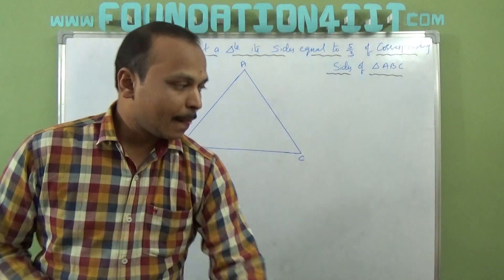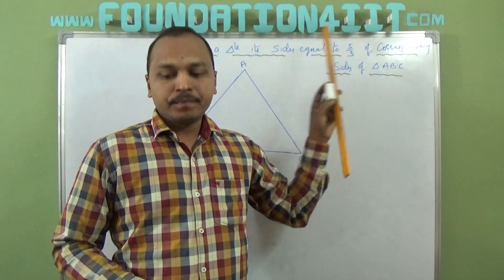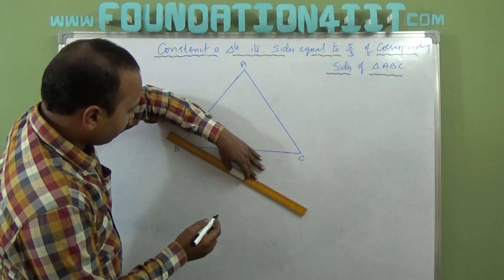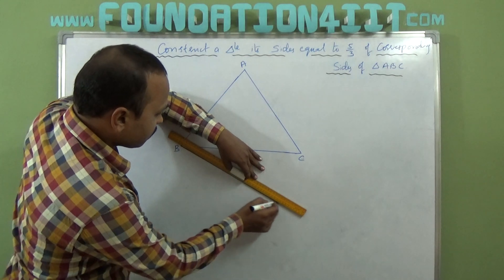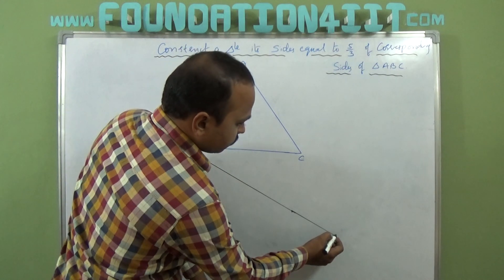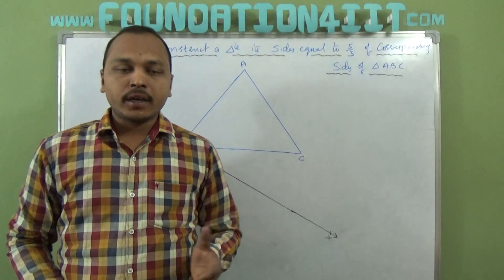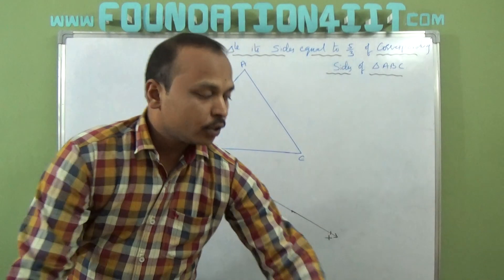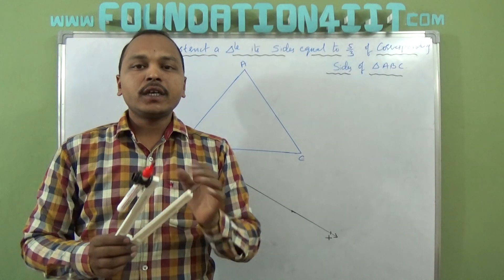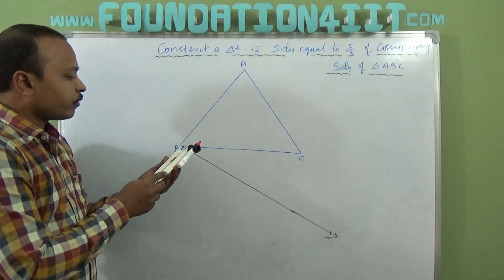Now we will see how to construct. ABC is a triangle and I want to construct at ratio 5/3. In 5/3 the big number is 5. Take one ray from B downward and divide it into 5 equal parts. Take ray BX at some accurate angle and construct the ray first. In 5/3 the big number is 5, so you need to cut 5 equal parts. Take any reasonable distance and make it into 5 parts.